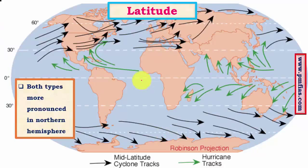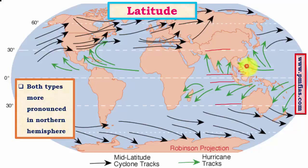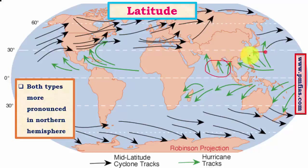First, let us compare the latitudinal extent in which these cyclones occur. Tropical cyclones occur between 5 degrees and 30 degrees north, and 5 degrees and 30 degrees south, forming in both hemispheres. At these latitudes, the Coriolis force is sufficient, warm ocean temperatures are around 26.6 degrees Celsius, and wind shear is very low during key seasons.